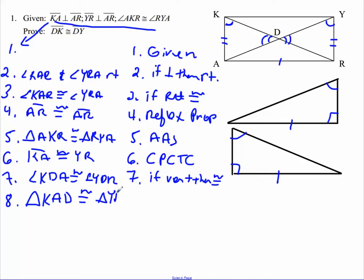CPCTC. Got to make sure that they correspond. Sometimes I go too fast. And that's going to be angle angle side. And then 9, we got the CPCTC event, which we're proving DK is congruent to DY. CPCTC.